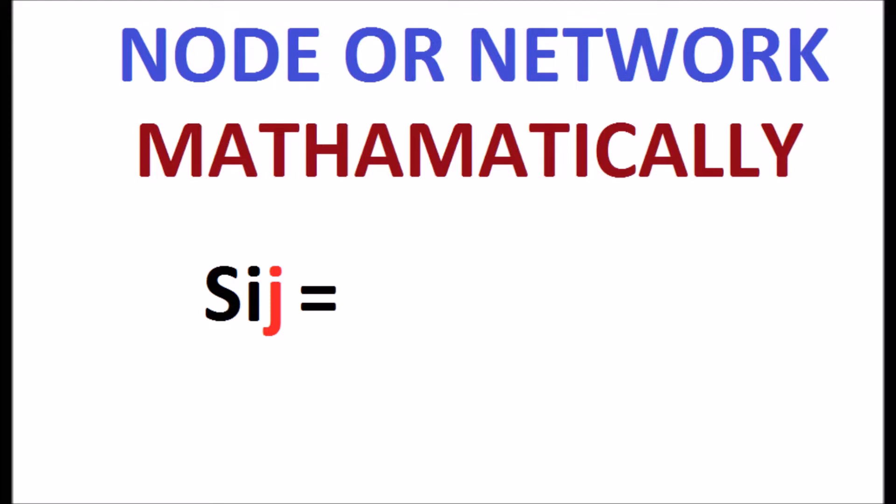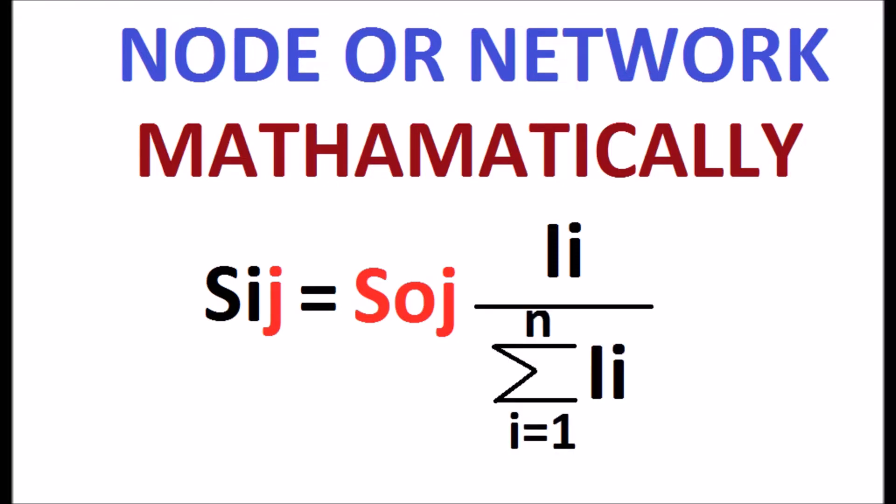Is equal to j-th load power SOj multiplied by the ratio of i-th source current Ii to the total of source currents, sigma of I1 to N, Ii, as shown in the equation.